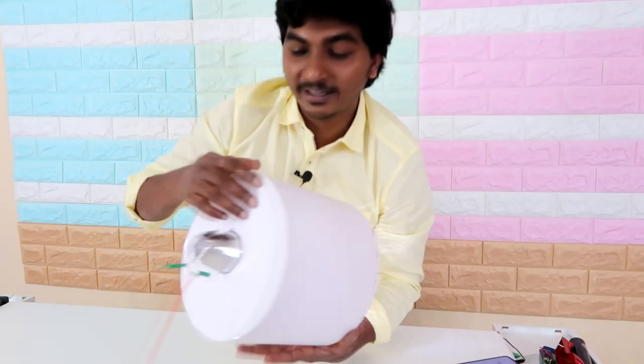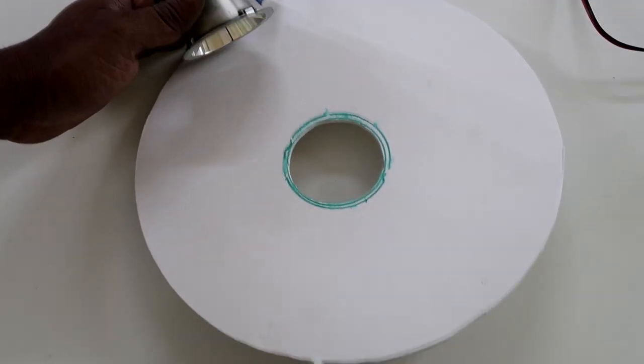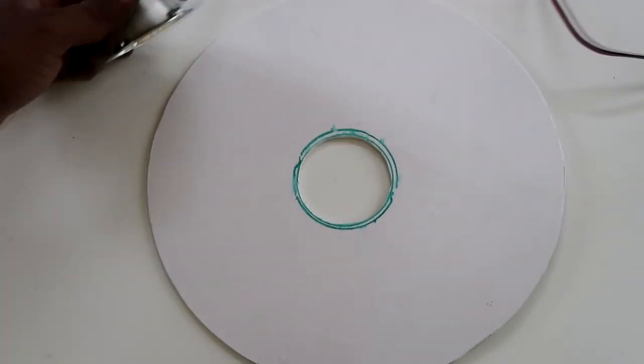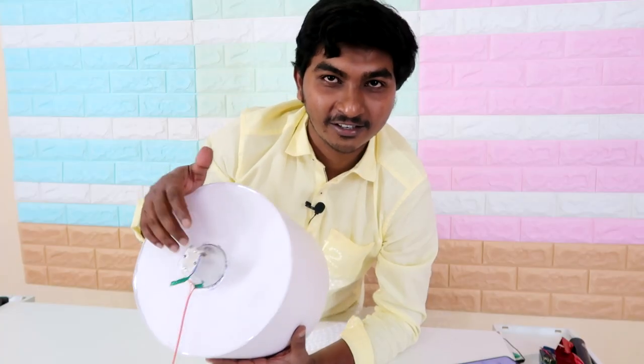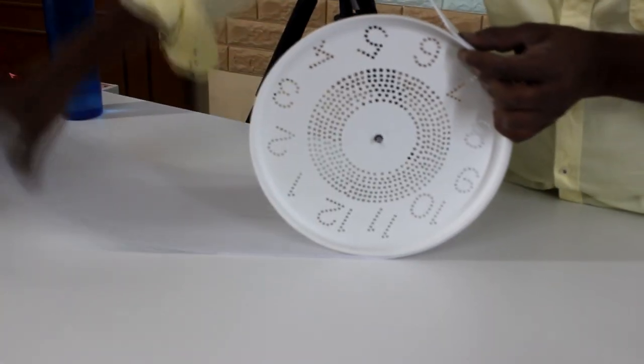I've cut this disc exactly the size of the clock and made a hole in the center and fixed this light here. I've cut 80 centimeters of the foam which is equal to the circumference of the clock, and rolled it and glued it very well.